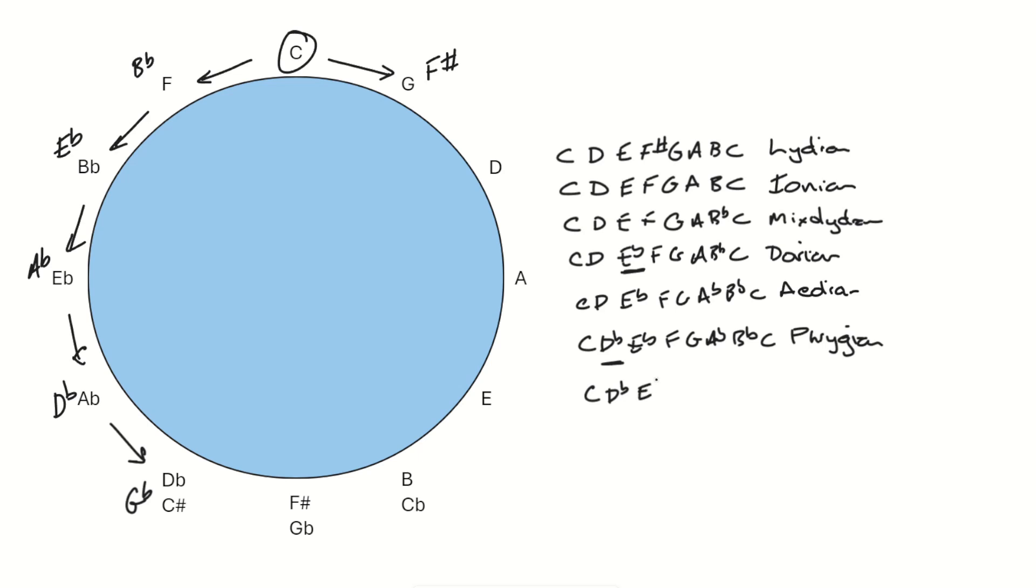So if we make one more step around, we end up flattening the G. We do the same thing to our scale. We end up with C, Db, Eb, F, Gb, Ab, Bb, and C. And that gives us our Locrian mode.